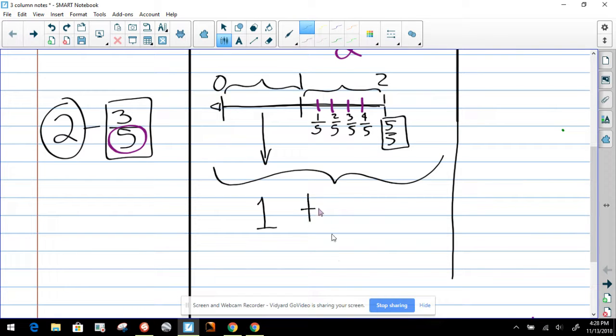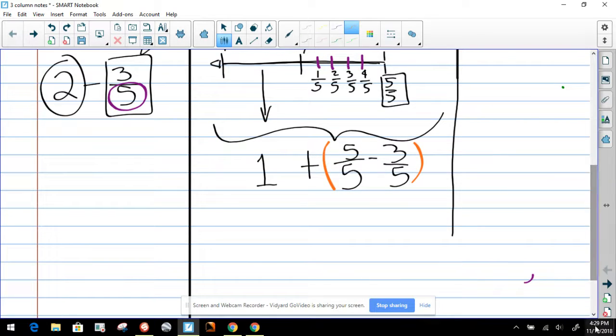We have one whole, which is this whole right here, plus we have 5/5. Now we're going to subtract this number, 3/5 minus 3/5. And that's how we borrow when we're solving these kinds of problems. So now we can associate this together so it is easier for us to see the answer.